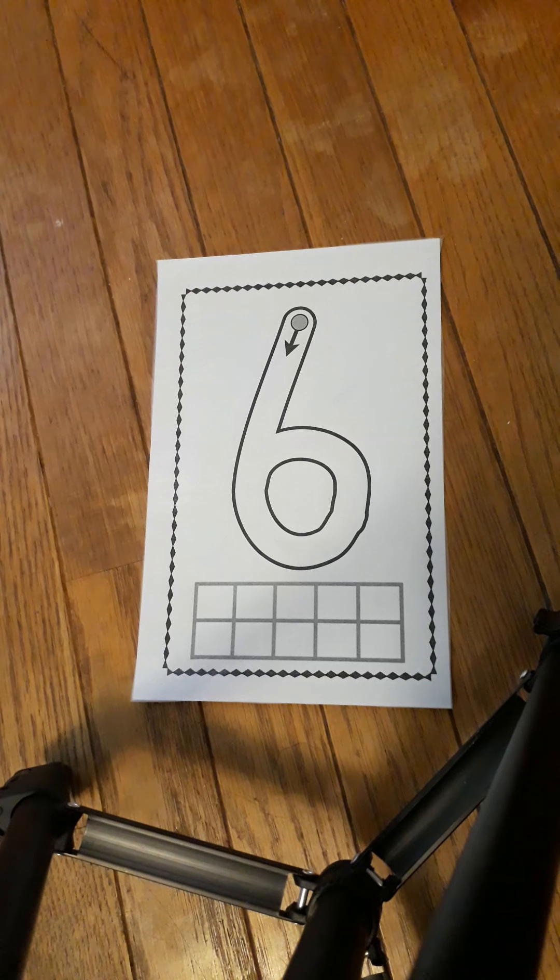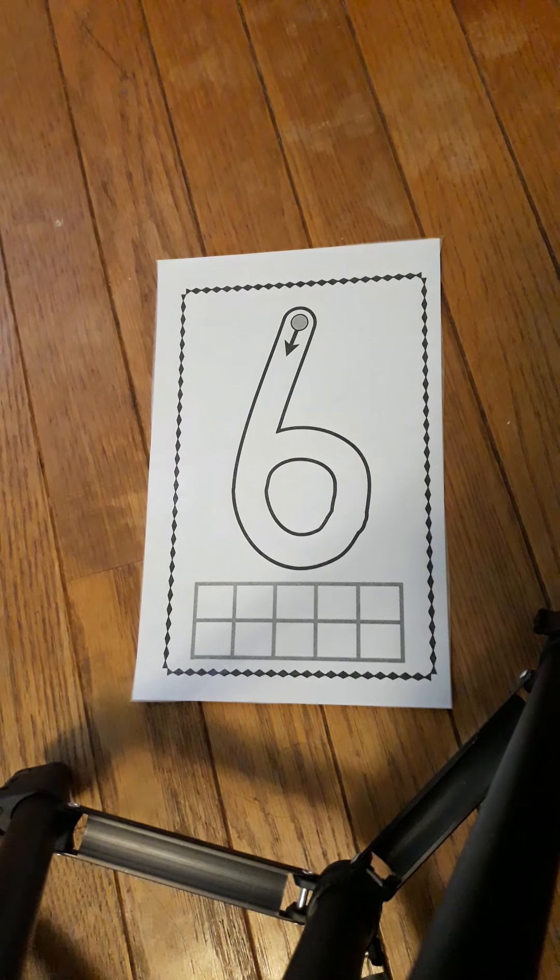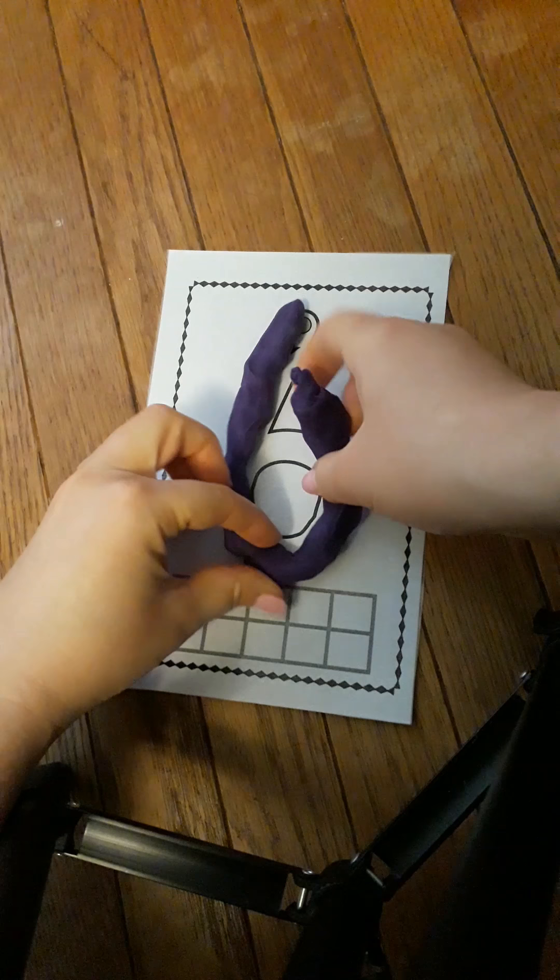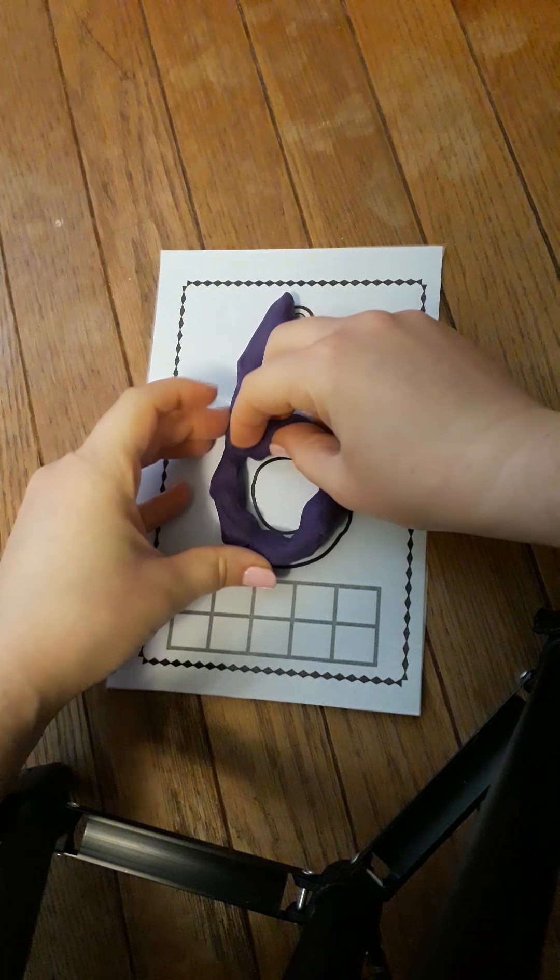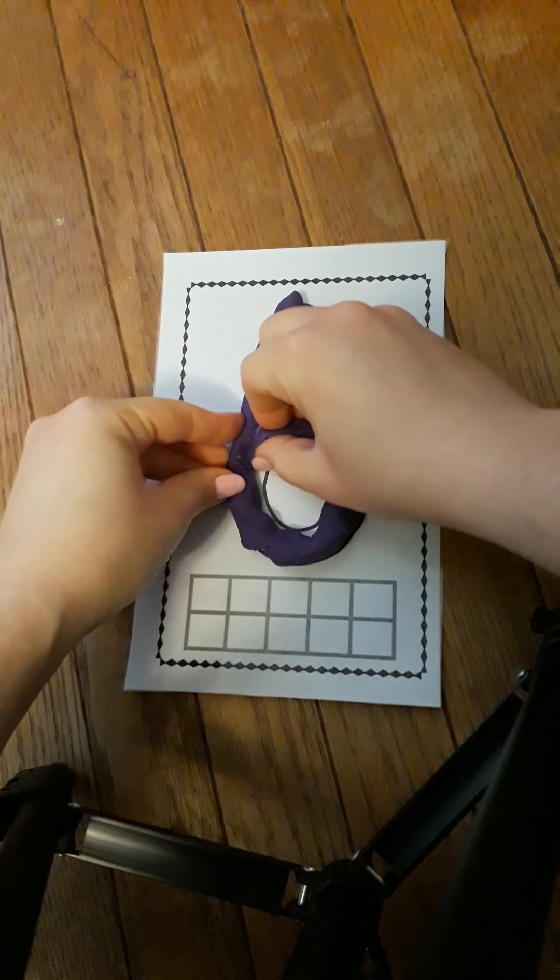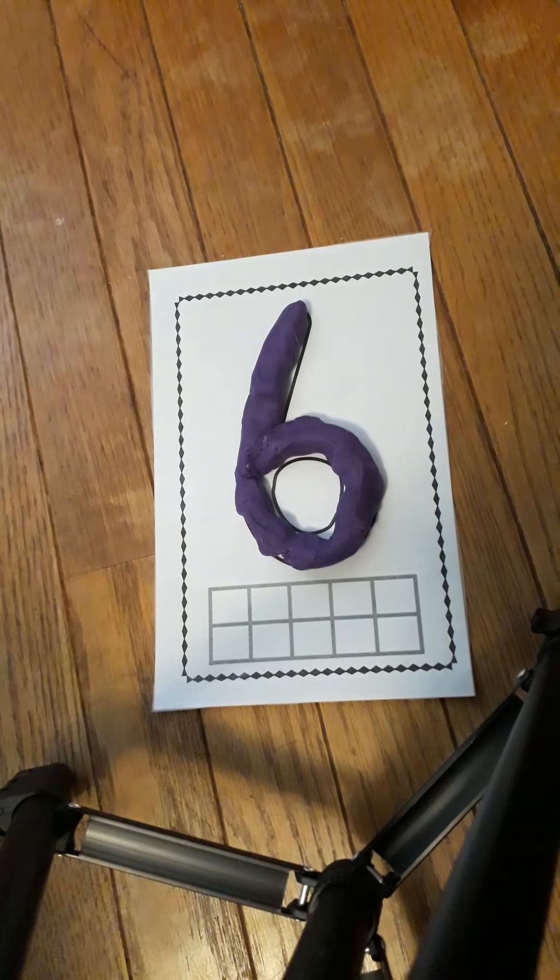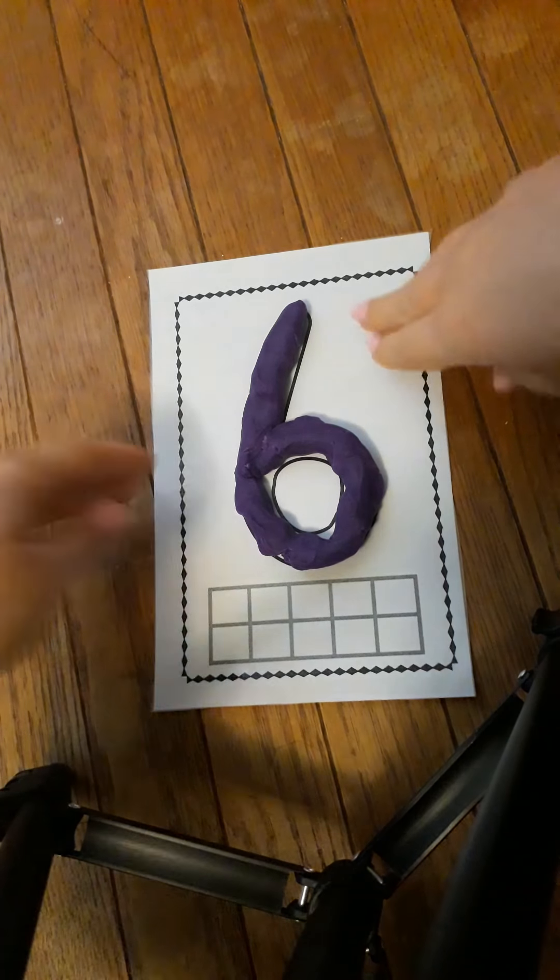Let's see if I can do it. I have to make it long enough to do the curve and the loop of my six. Let's try: make a curve, then make a loop. There are no tricks to make a six. Okay, there's my six!